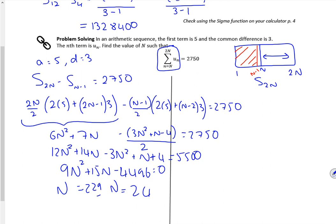That was a bit busy trying to get that done. So I expanded some of the brackets and rearranged it and ended up with a quadratic which was 9n² plus 15n minus 4496 and it gave me n is 229 and n is 24. It has to be an integer so n is 24.